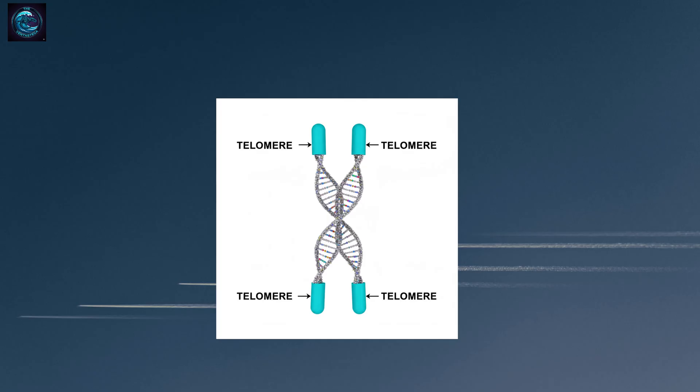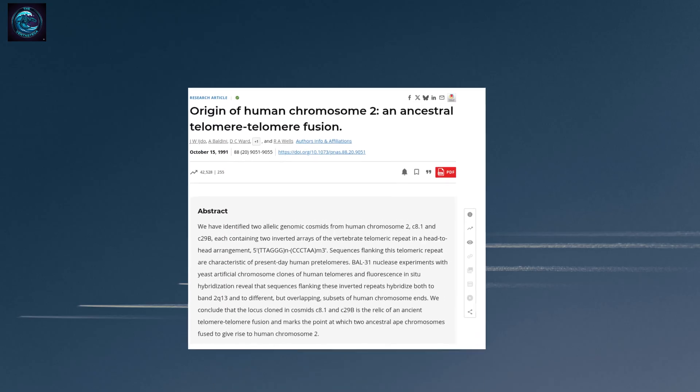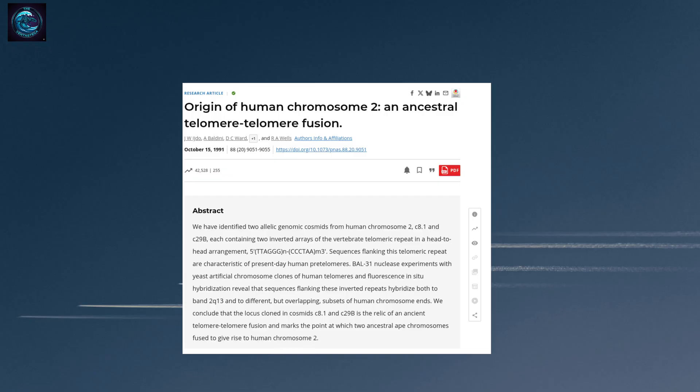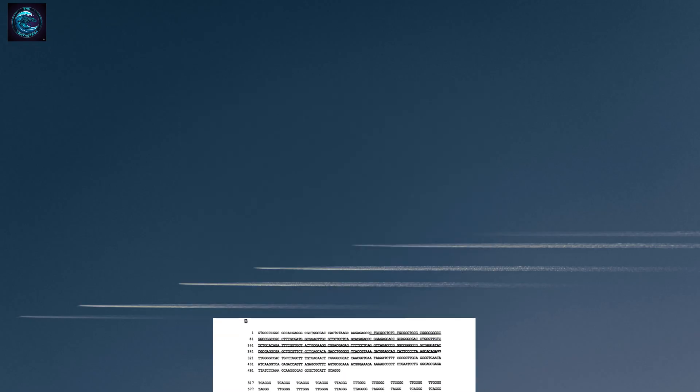But here's the remarkable discovery. When scientists examined human chromosome 2, they found something extraordinary. Right in the middle of the chromosome, they discovered telomere sequences.